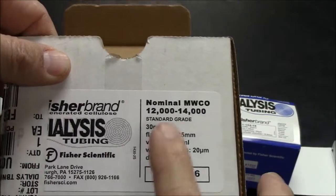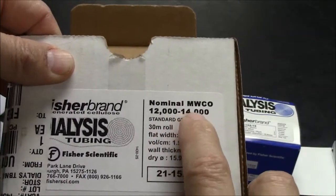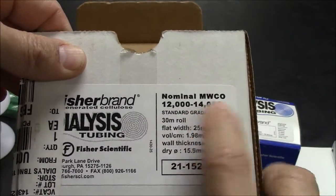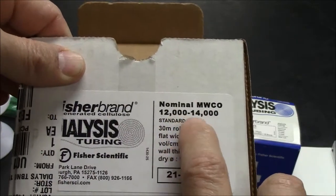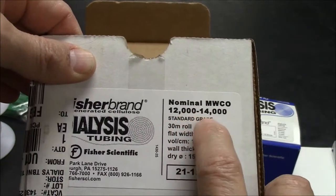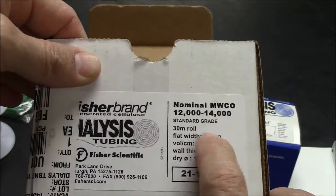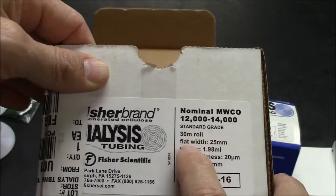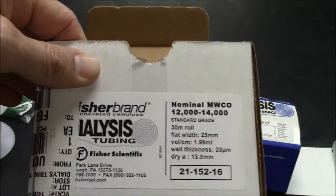Dialysis tubing has a molecular weight cutoff. That's what this stands for, molecular weight cutoff. This one, anything larger than this mass, 12,000 to 14,000, should be retained inside the tubing, whereas smaller molecules can leak out through the pores.